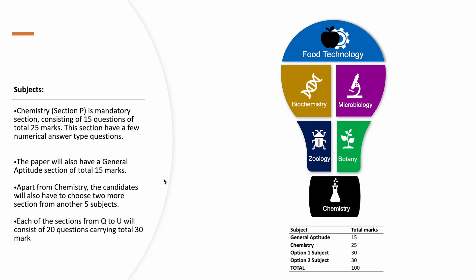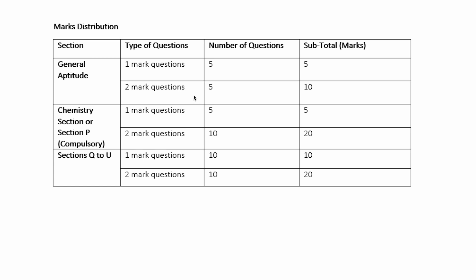Let's look at the marks distribution for Life Sciences. For General Aptitude, there are five one-mark questions totaling five marks, and five two-mark questions totaling ten marks — so 15 marks in total. For Chemistry, the compulsory section, we have five one-mark questions and ten two-mark questions, giving a total of 25 marks. From sections Q to U, each is a 30-mark section with ten one-mark questions and ten two-mark questions.